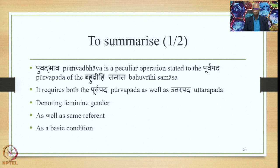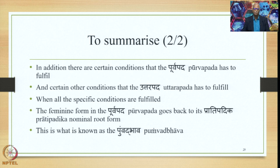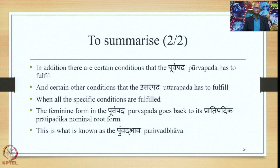To summarize, Pumbadbhava is a peculiar operation stated for the Purvapada of the Bahuvrihi Samasa. It requires both the Purvapada as well as the Uttarapada denoting feminine gender and having the same referent as the basic condition for the sutra to apply. In addition, there are certain conditions the Purvapada must fulfill and certain other conditions the Uttarapada must fulfill. When all specific conditions are fulfilled, the feminine form in the Purvapada goes back to its Pratipadhika or nominal root form — this is what is known as Pumbadbhava. We continue studying this and other aspects of the Bahuvrihi Samasa in the next lecture. Thank you very much.